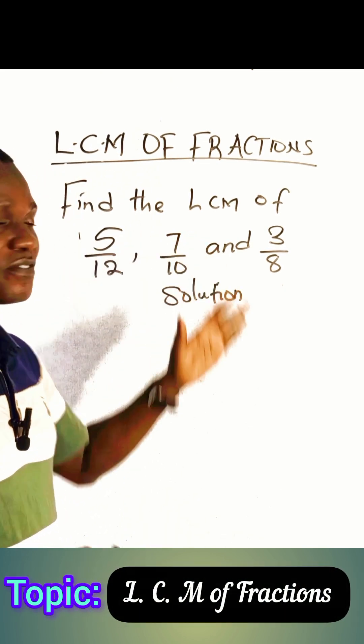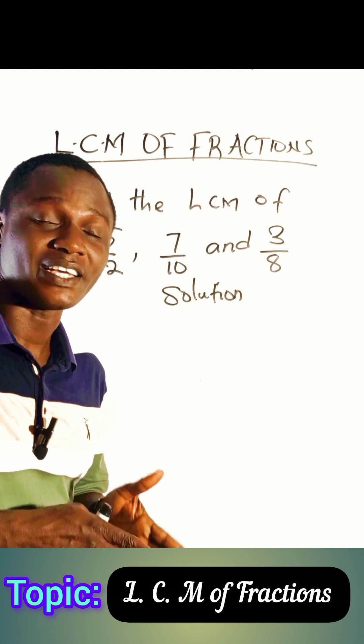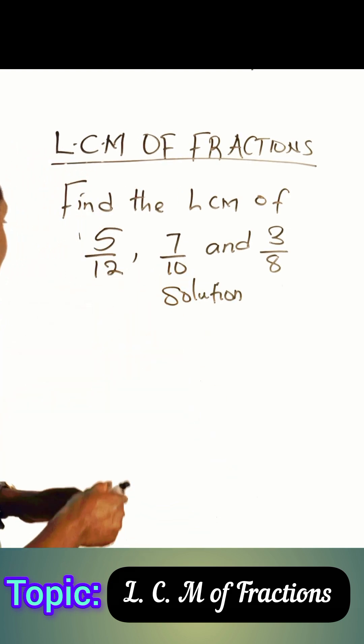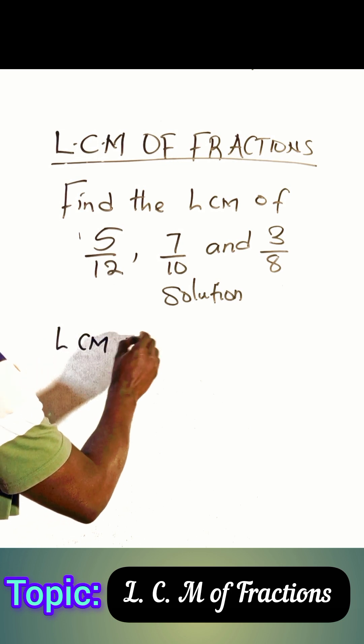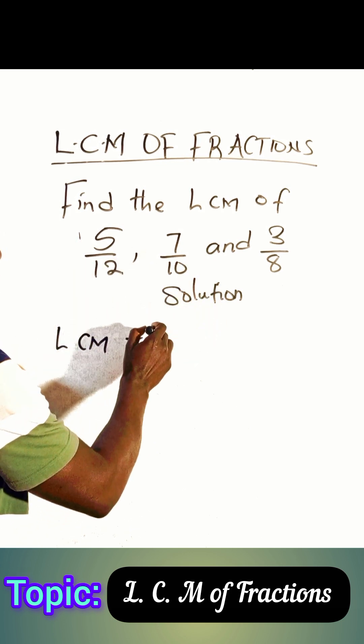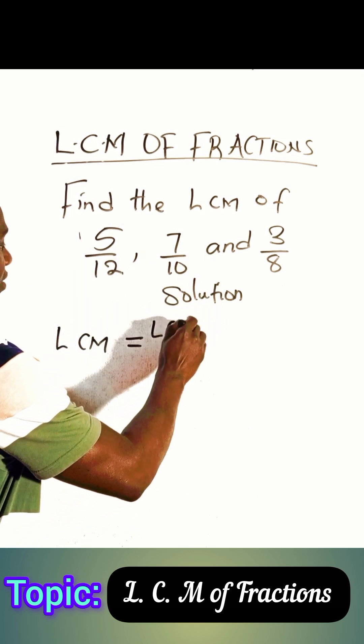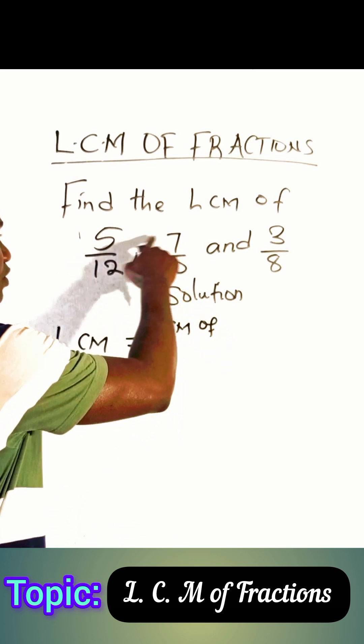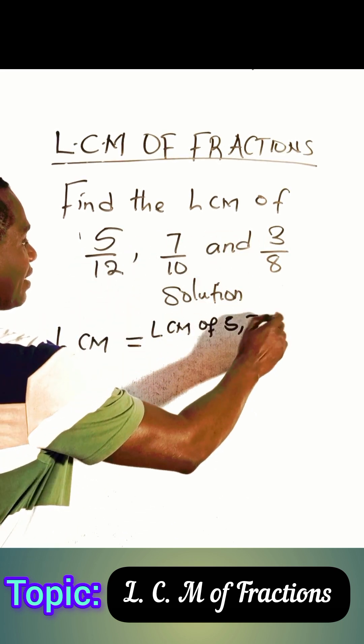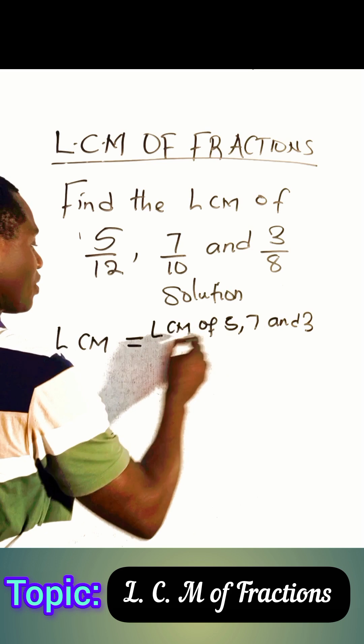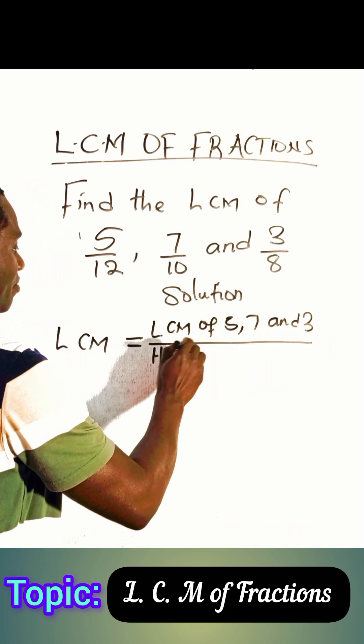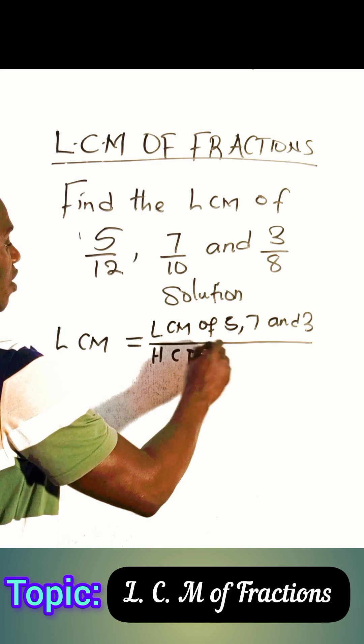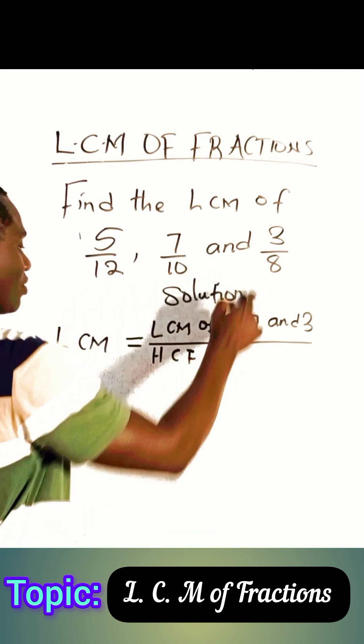Of these three fractions, how do we find the LCM of fractions? For this case, let me give you a very brief formula that will help you to find this. You take first of all the LCM of the numerators: 5, 7, and 3, all over the highest common factor, the HCF of the denominators: 12, 10, and 8.